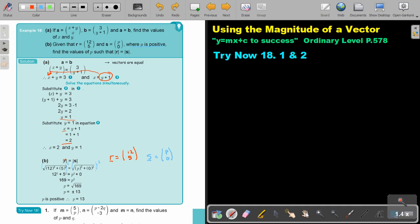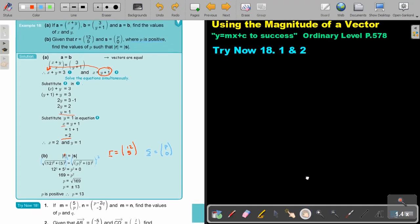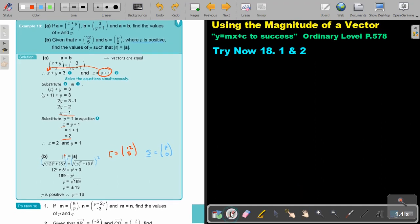Let's start. I'm just going to move it up just a little bit. You can just do 1 first. In the first one, this is number 18 and this is number 1. If M is this and N is this, and M equals N, the two vectors that are equal, find the values of P and Q.